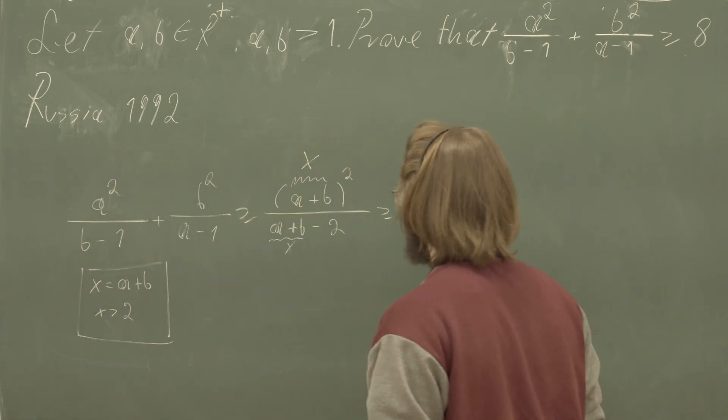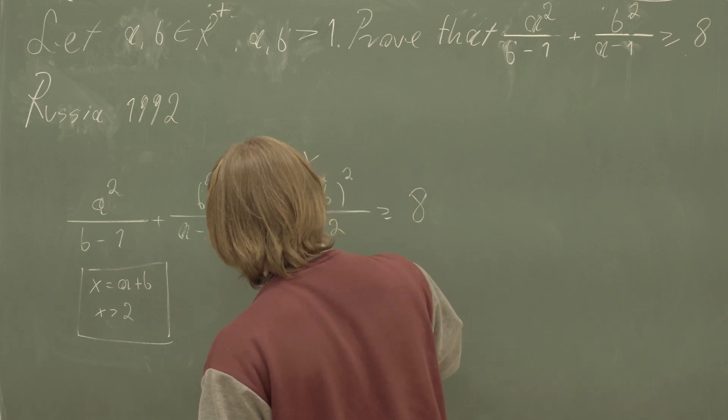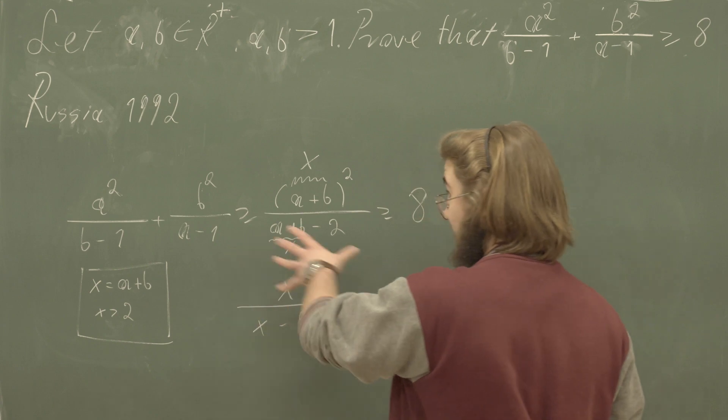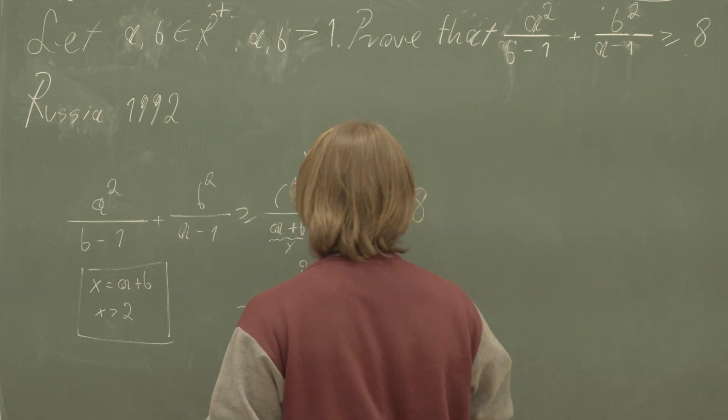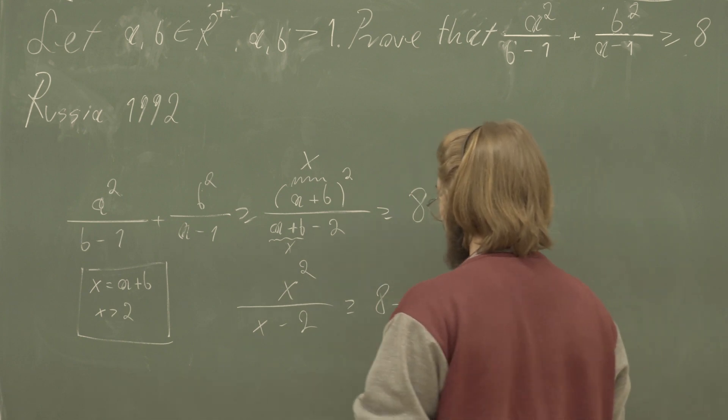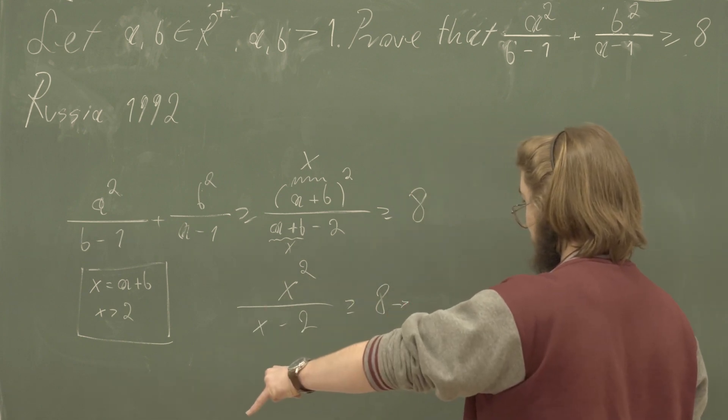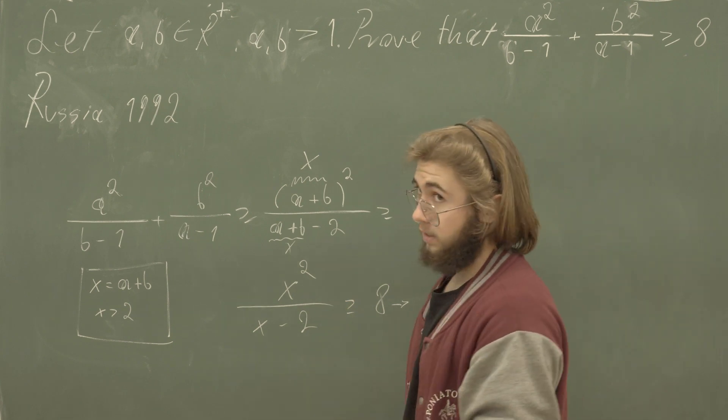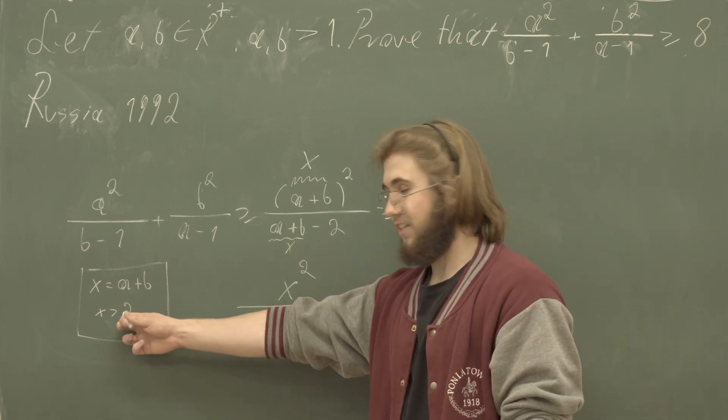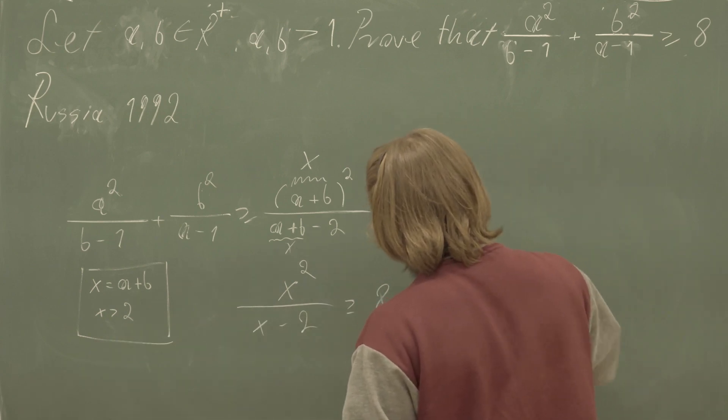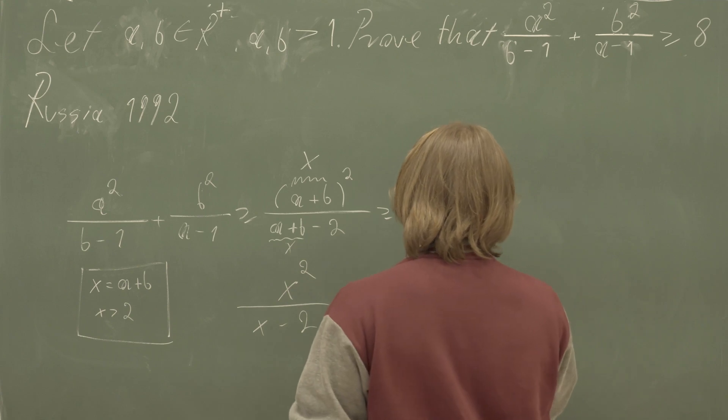So what do we have now after this substitution is made? We have our inequality reducing to something like this: x squared over (x minus two) is greater than or equal to eight, which is equivalent by multiplying both sides of this inequality by (x minus two), which we know is not zero—it's kind of important that it's not zero because x is always greater than two.